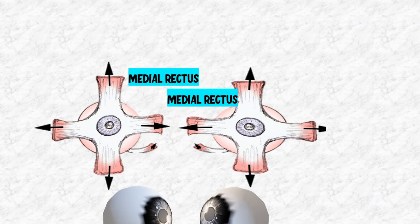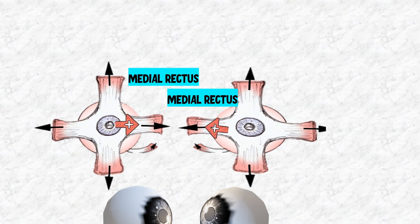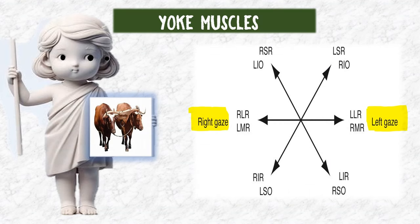This law also applies for vergence. For a convergence movement, the medial rectus of both eyes will be stimulated so both eyes can adduct and cause convergence. This reference image shows that for various conjugate movements, a pair of yoke muscles is activated.